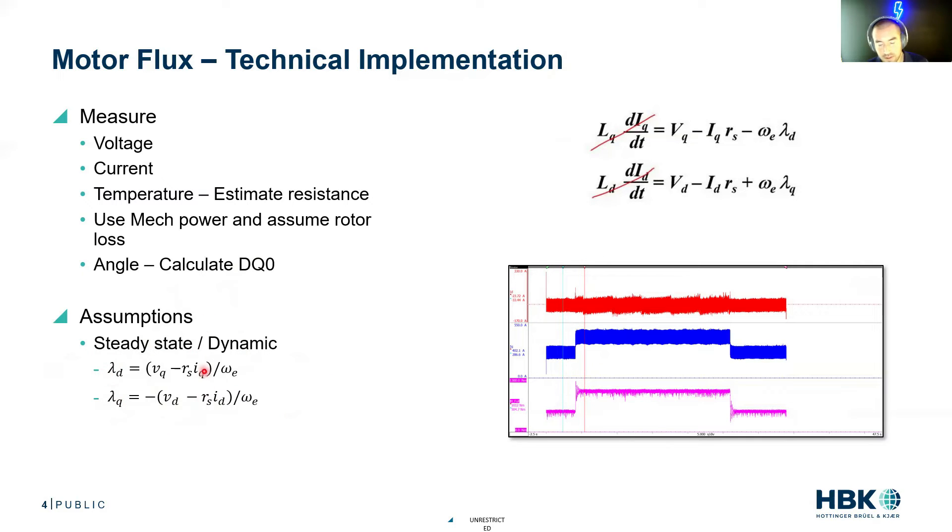This is pretty palatable. This can be implemented. All we needed to do was measure voltage current, do our DQ zero transformation, which I have demonstrated on the screenshot here, and for that we're using our angle, and then we get a pretty simple expression.